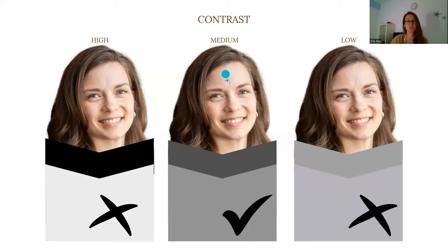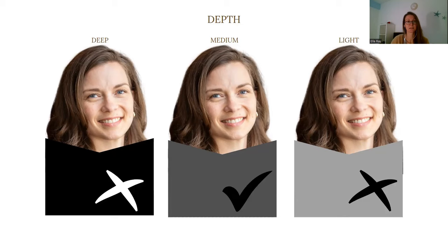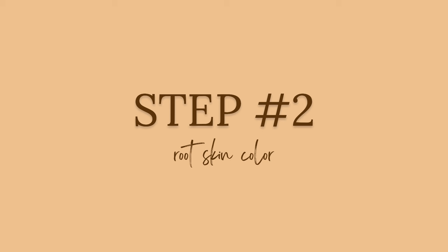The next step is to look at the depth — is she deep, medium, or light? Meaning, how dark are her features: hair color, skin tone, eyes? In her case, she has a medium brown hair color, light skin, and blue eyes, which are all in the range of medium to light.